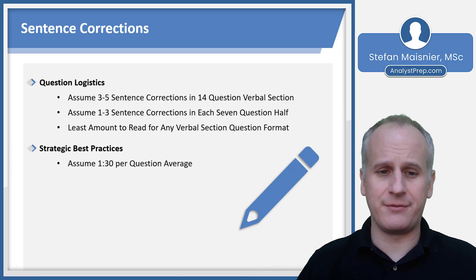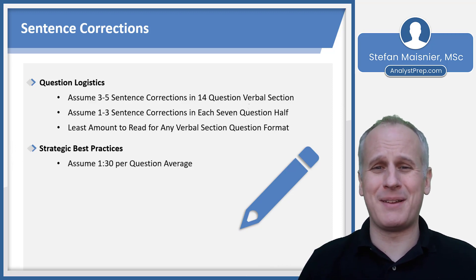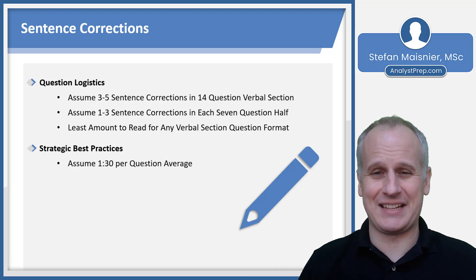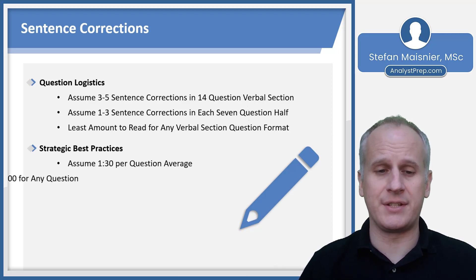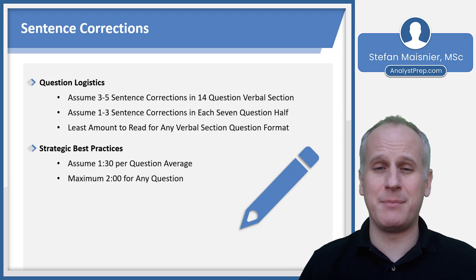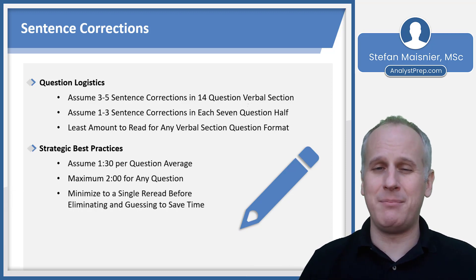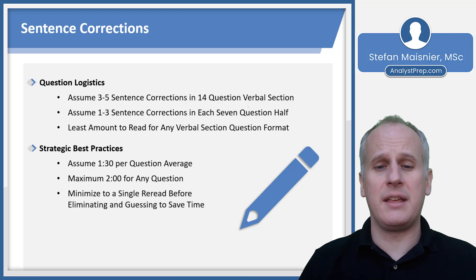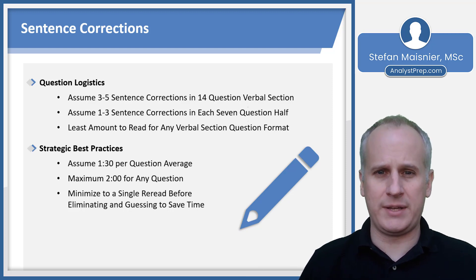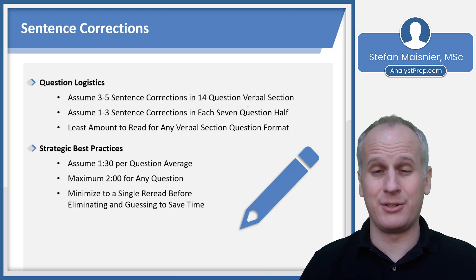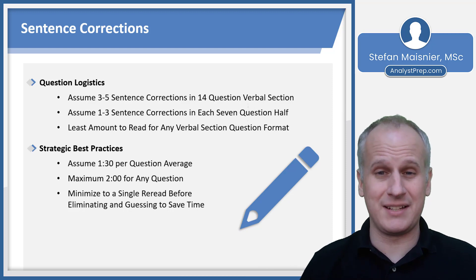Some best practices: you want to spend on average 90 seconds per sentence correction. They should go a bit faster than everything else on the section, so that means a maximum of two minutes for any sentence correction in either verbal section half. You want to minimize yourself to a single reread of anything to avoid wasting time. That means you're basically going to read the sentence at the very beginning and at the very end, so that you're not wasting time.